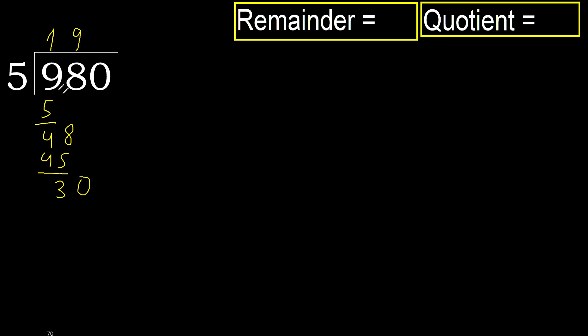30. 5 multiplied by 6 — 30 is not greater. Subtract.